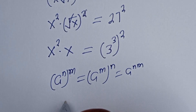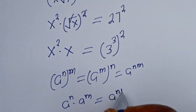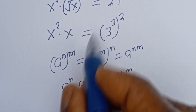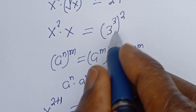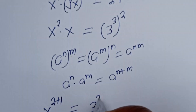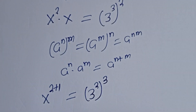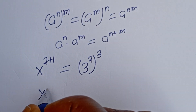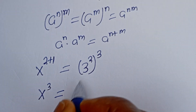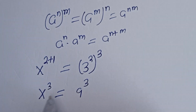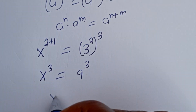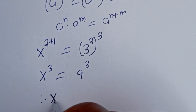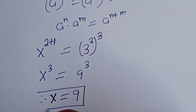And if you have L to the power of N multiplied by L to the power of N, this equals L to the power of N plus N. So this can be written as S to the power of 2 plus 1, which equals 27. This can be written as 3 squared to the power of 3. This gives us S to the power of 3 equals 9 to the power of 3, so S is equal to 9. Therefore, S is equal to 9 and this is the final answer.